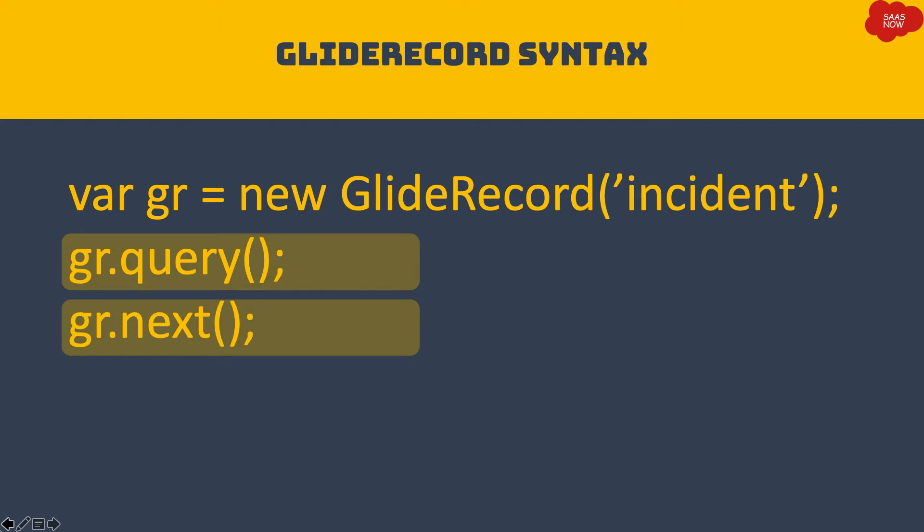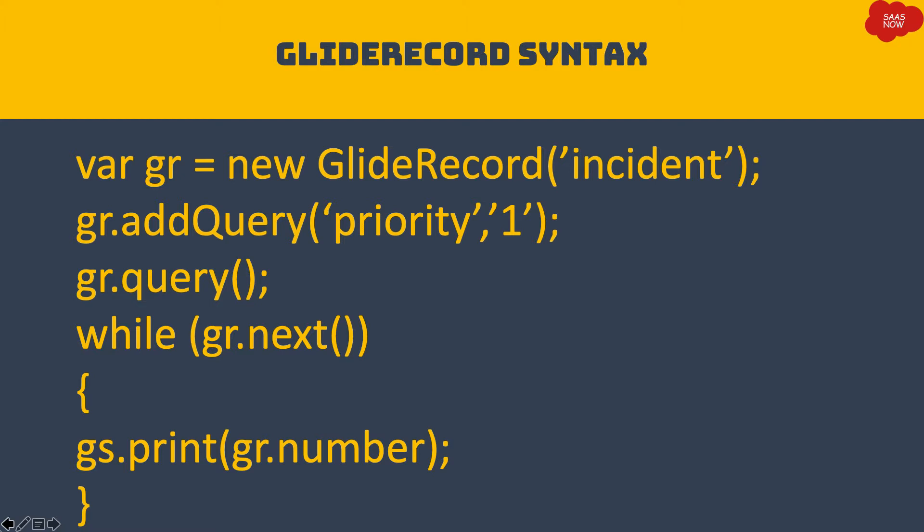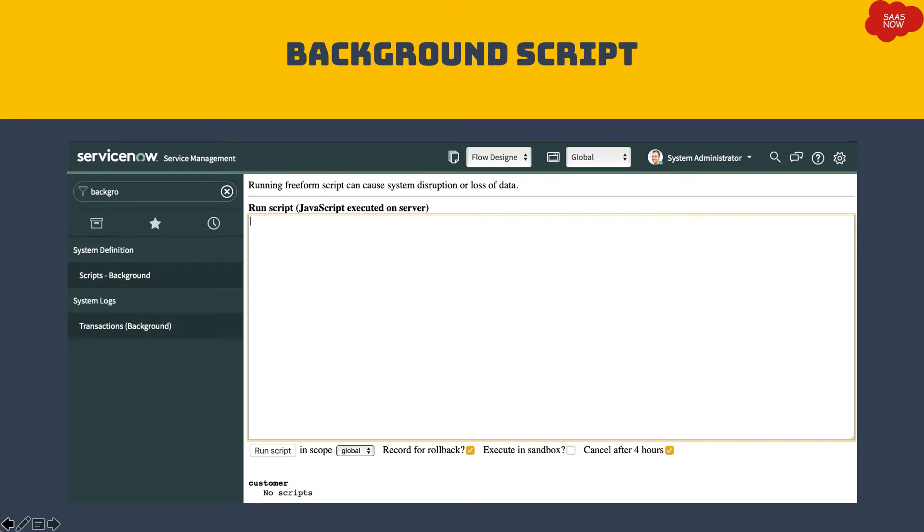The overall GlideRecord syntax works like this: you initiate the GlideRecord object with the table name, then call the addQuery method to apply filters, then call the query method to query the table per the filter, then loop through every record using the next method in a while loop, and print each record retrieved. This is the main script structure, though you will change methods as per your requirement.